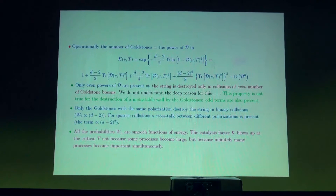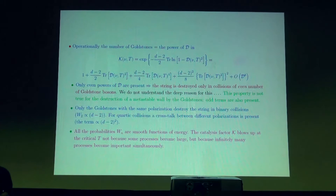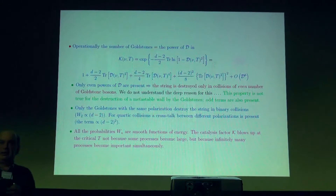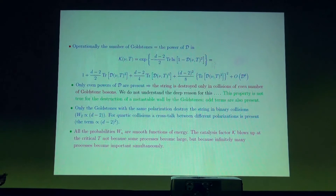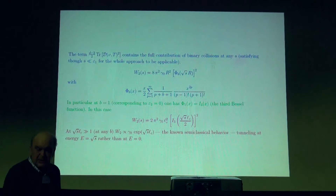None of the individual processes is responsible for the appearance of the critical point, where the circle wraps around the cylinder. The critical point arises because all the terms of this expansion become simultaneously important at the critical point — all the processes contribute. So it's not an individual process but the multitude of processes which gives rise to the critical point.